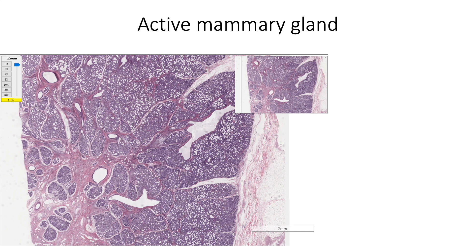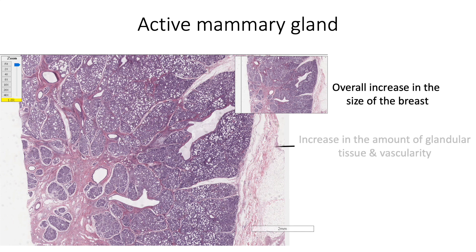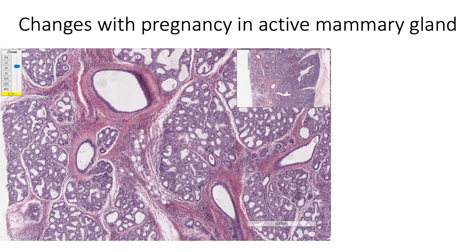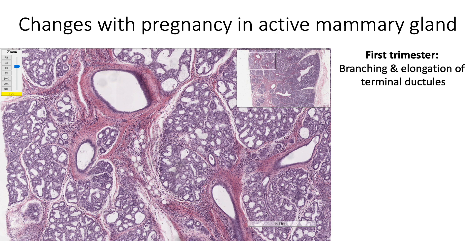The active mammary gland shows an overall increase in the size of the breast. There is an increase in the amount of glandular tissue and vascularity, with a corresponding reduction in the fibrous and adipose stroma. The mammary gland shows progressive changes as pregnancy advances. In the first trimester, we see branching and elongation of terminal ductules in the terminal duct lobular units.